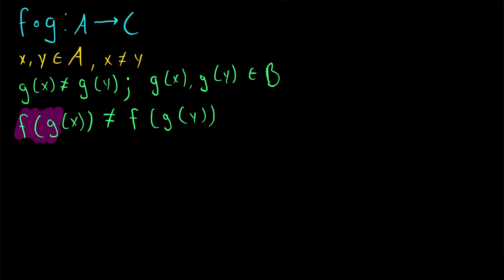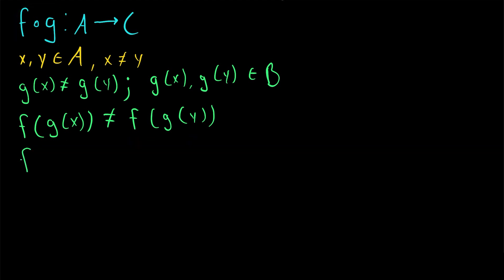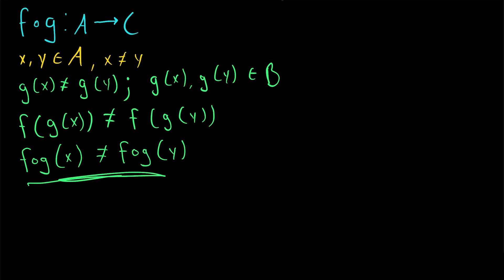F of G of X and F of G of Y — by definition, that's just our function composition F of G evaluated at X and evaluated at Y. So this is the same as saying F of G evaluated at X is not equal to F of G evaluated at Y. And this demonstrates that our composite function F of G is injective.